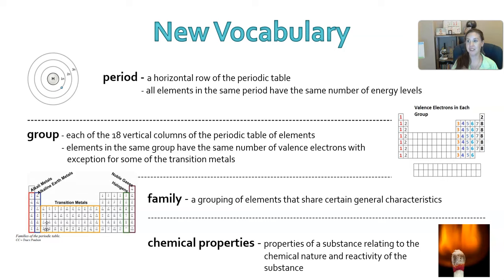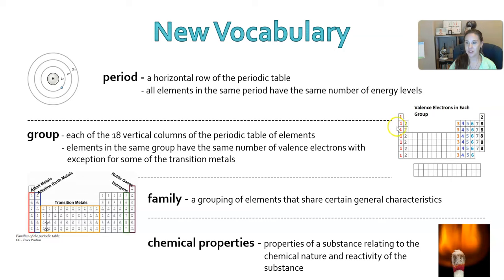All elements in the same period have the same number of energy levels. For example, every element in the second row has two rings — two energy levels — because two electrons can fit on the innermost ring, and after that we need a new ring. As we go down the table, the number of rings increases to accommodate more electrons.